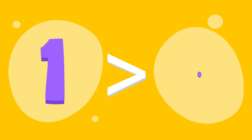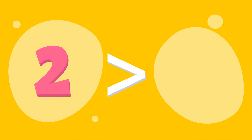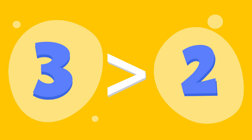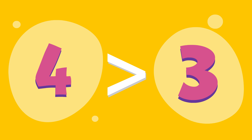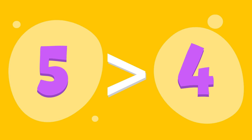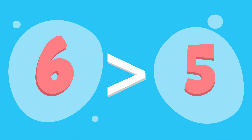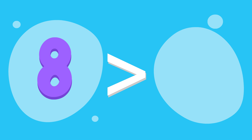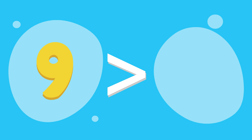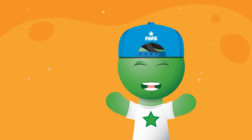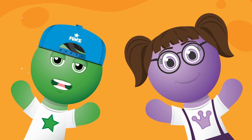One is greater than zero. Two is greater than one. Three is greater than two. Four is greater than three. Five is greater than four. Six is greater than five. Seven is greater than six. Eight is greater than seven. Nine is greater than eight. Ten is greater than nine. Greater than less than inequalities.